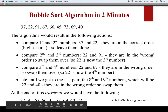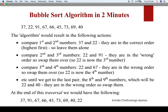Hello, in this session I'll be explaining about the bubble sort algorithm. So we have a set of numbers: 37, 22, 91, 67, 66, 45, 73, 69 and 40. Our task is to sort these numbers.